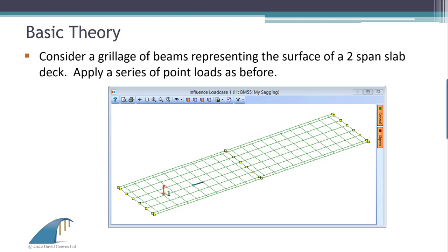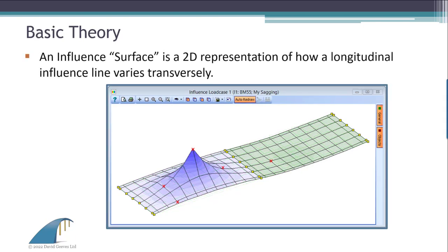and plot the moment value at the blue dot as ordinates above the applied load. And we can do this until there are enough points to define the surface. And this then is known as an influence surface.